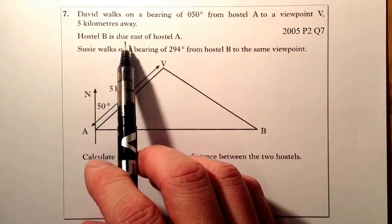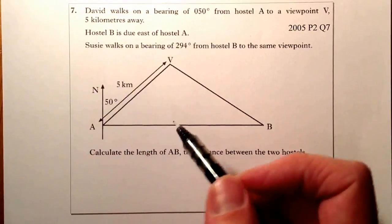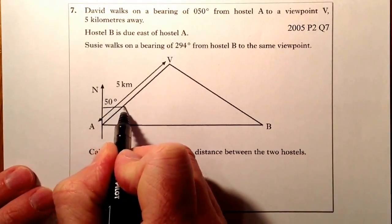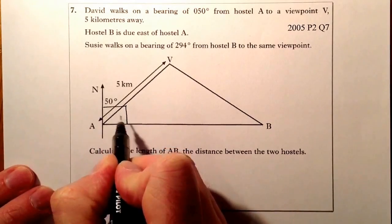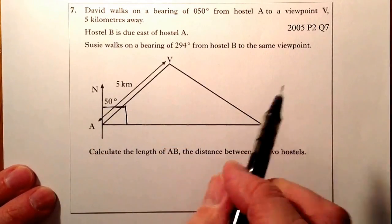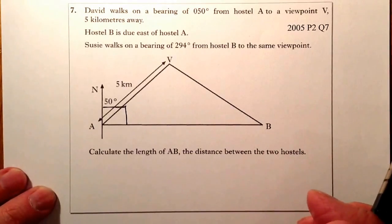Hostel B is due east of Hostel A, so that would tell me that the angle between the two of these is going to be a right angle. So that's a right angle there, from north to there. If you go east, that's going to be 90 degrees, or 090.